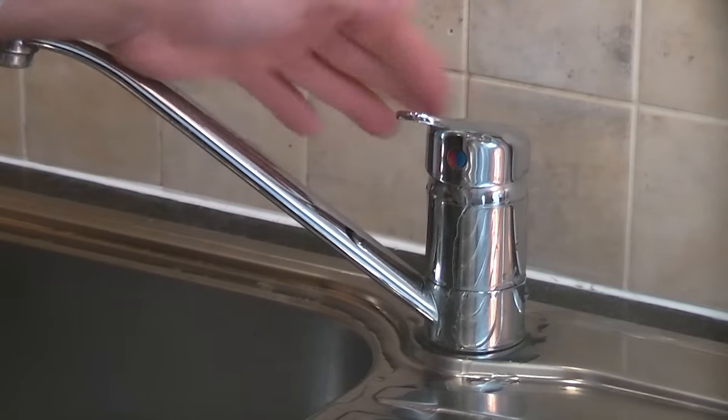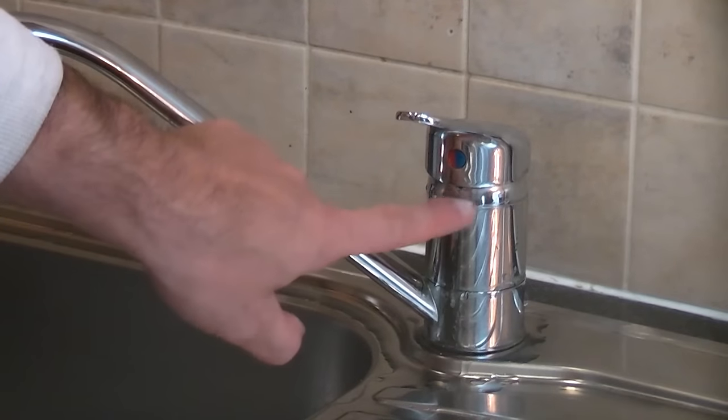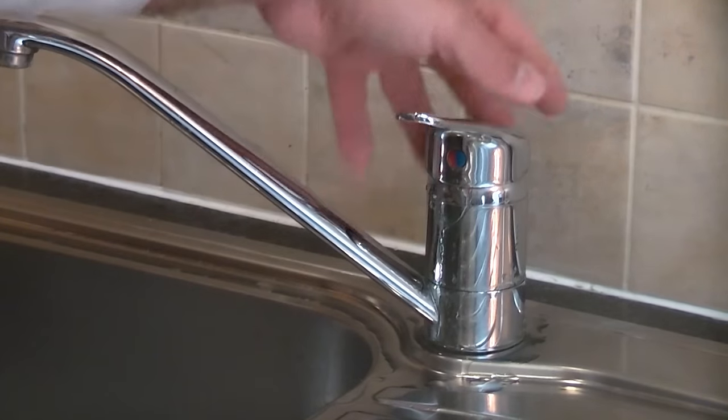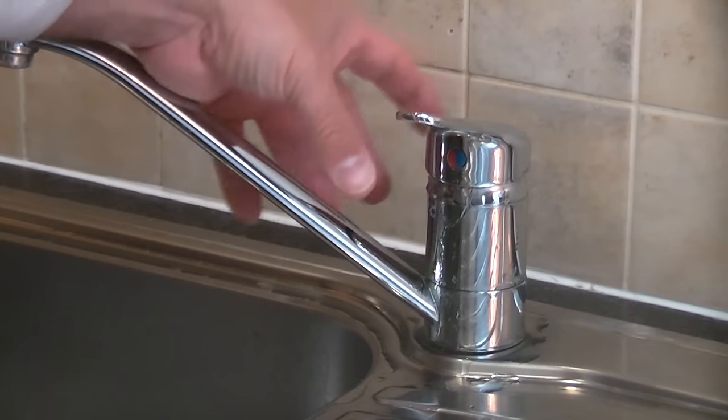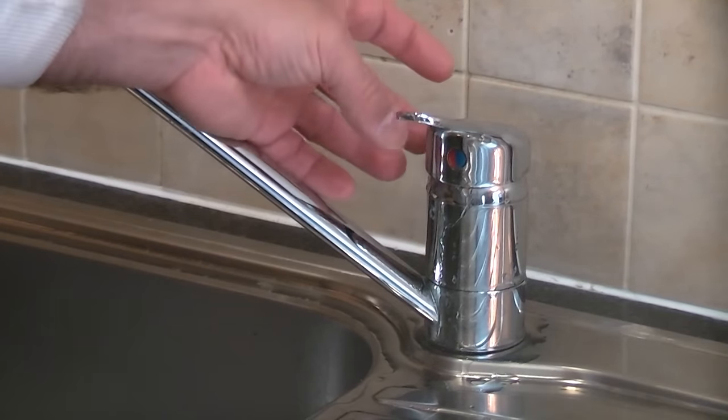This is a common problem with mixer taps. This one is actually leaking from the top there, which indicates that the cartridge in there has actually failed. It could be one of the sealing o-rings or there could be some components actually in the cartridge itself.